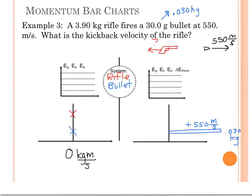If I take those and multiply 550 times 0.030, I determine that the overall momentum of the bullet is positive 16.5 kilogram meters per second.